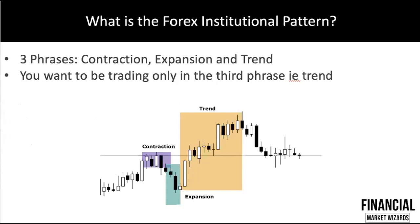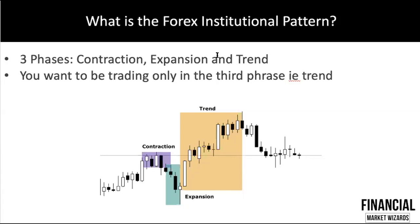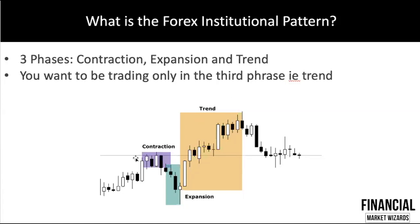So what is the Forex Institutional Pattern? It is made of three phases: contraction, expansion, and trend. I'll go into greater detail for each of these phases, but just know for now that there are three phases — contraction, expansion, and trend. For new traders especially, we want you to focus on the trend, because that's where you're going to make the bulk of your money. Contraction is the phase where you get very frustrated because price is going nowhere. Expansion can give you temporary profits if you get the direction right, but if you don't exit fast enough you'll lose money.